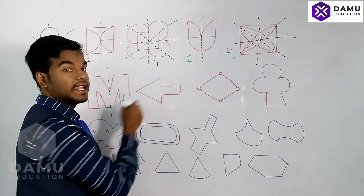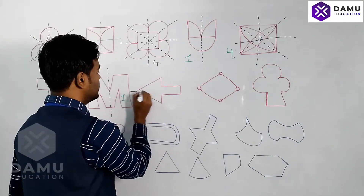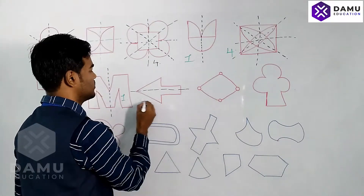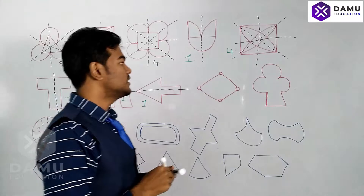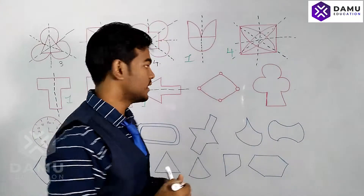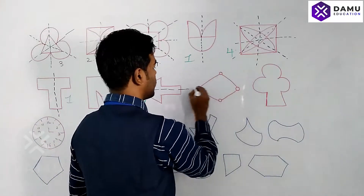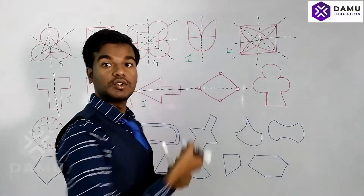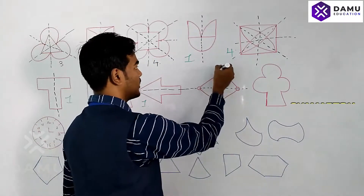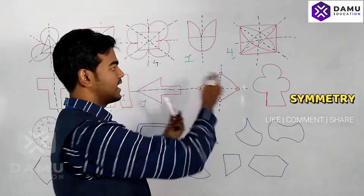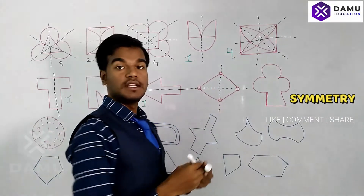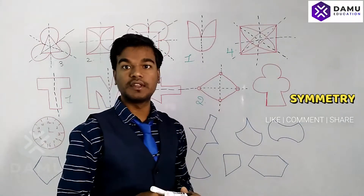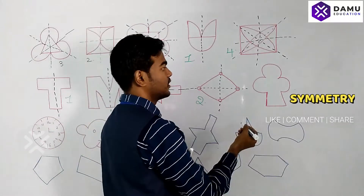For this shape, there is no vertical line of symmetry — only a horizontal line of symmetry. So it has one line of symmetry. For the next shape, if you fold vertically the halves coincide, and if you fold horizontally they also coincide. So that shape has two lines of symmetry.